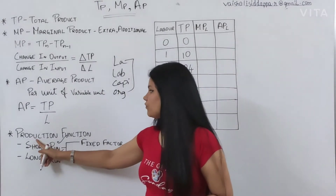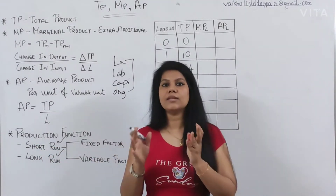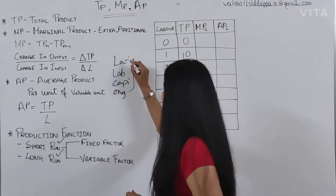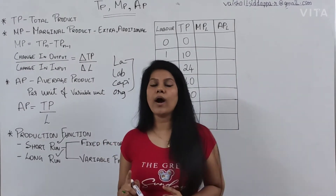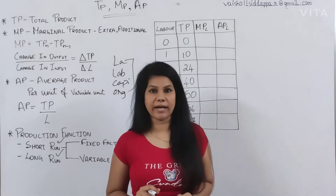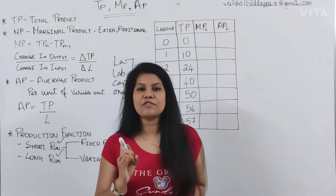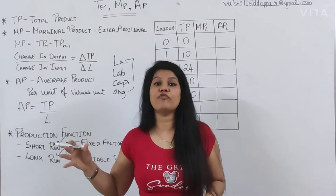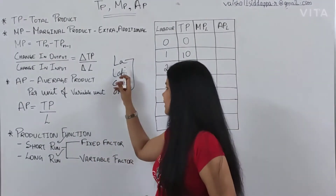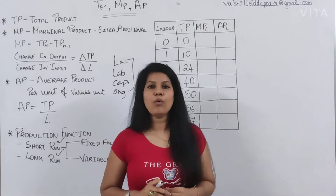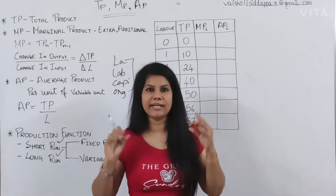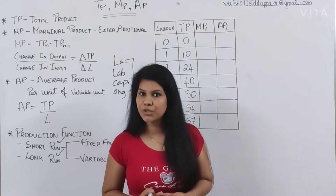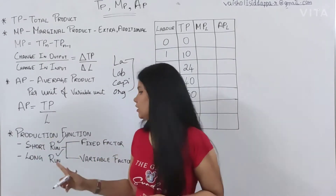We classify short run and long run based on how long production is happening. In the short run, we have two kinds of factors: fixed factor and variable factor. A fixed factor means the factor which is not going to change during the duration of production. For example, for six months or one year, I cannot change the building — I have hired it for two or three months and I cannot change it. So the building is definitely a fixed factor in the short run.